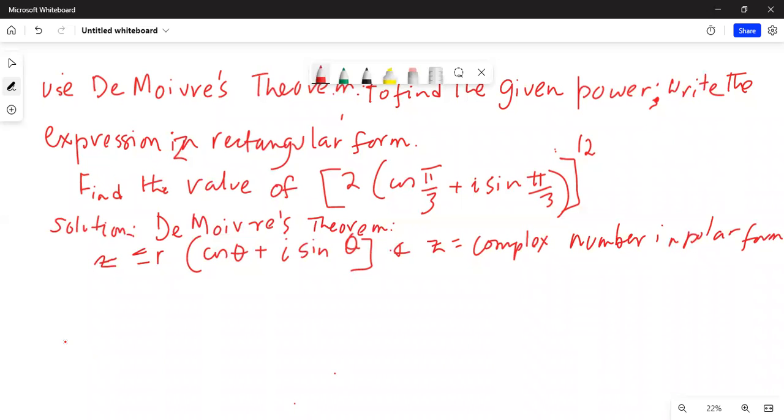De Moivre's Theorem states that z to the power of n is equal to r to the power of n times cosine n theta plus i sine n theta.